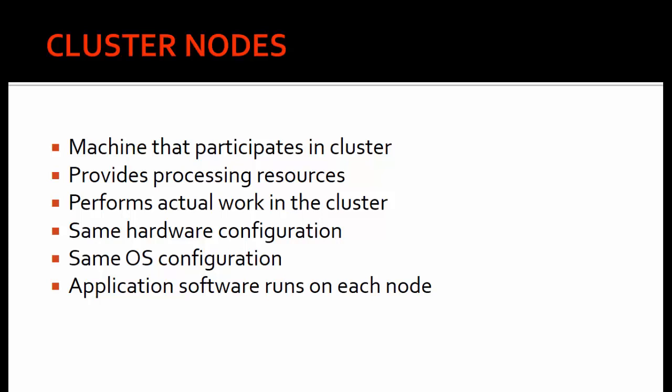Application software runs on each node — this refers not to the application using your database, but to your database software and clusterware software. Each node will have the clusterware software installed and each node will have the Oracle home installed. So you need to install the grid software and the Oracle home on every node; you cannot have a one-node installation and then continue.